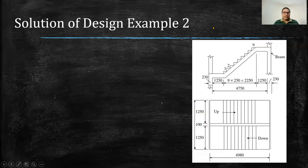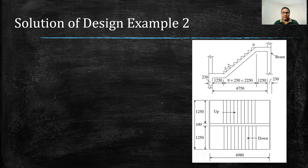Hello, welcome back. In the previous part, we were at step two where we were having general arrangement. As per general arrangement, we have the effective span as 4980.